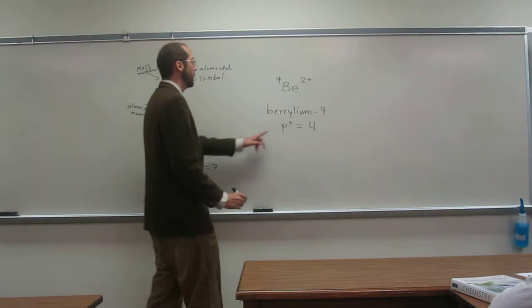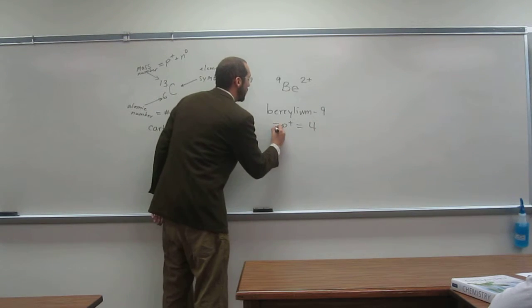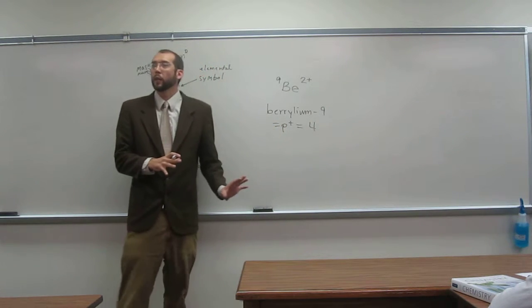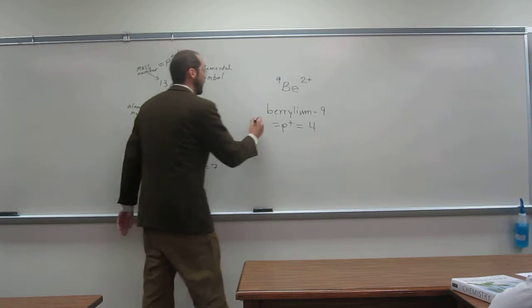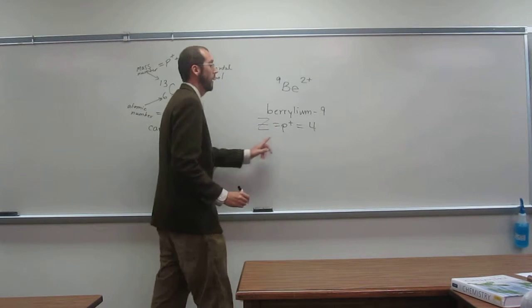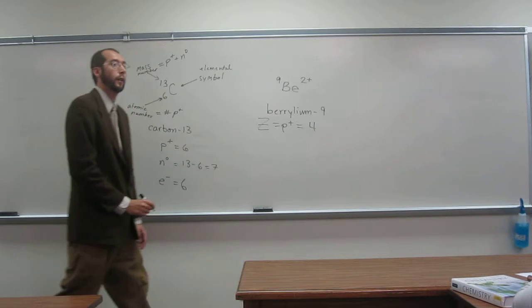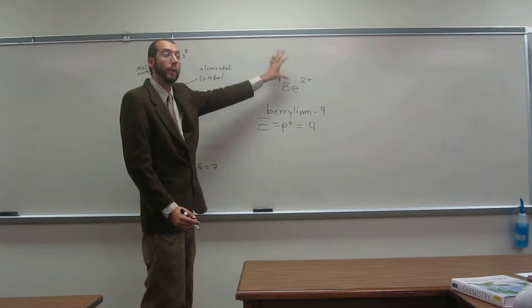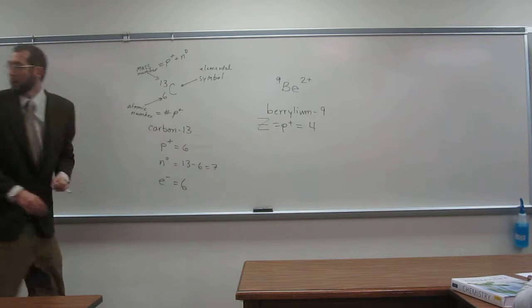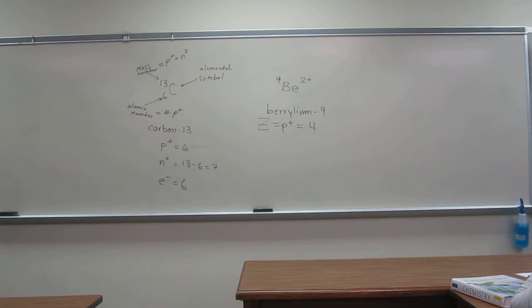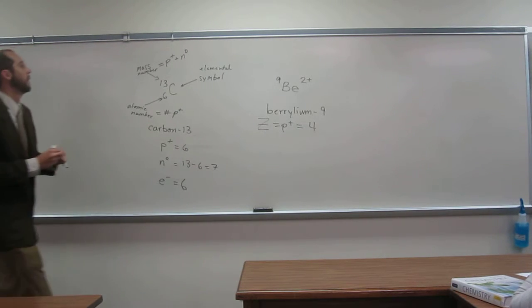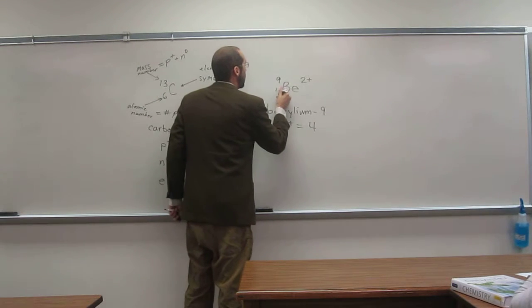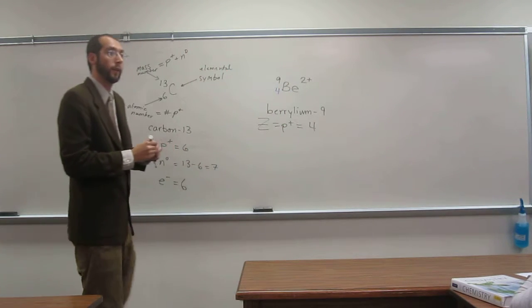So in other words, we could say, what's the symbol for atomic number? Z, right? So Z also equals four. Or if we wanted to put that somewhere on the elemental symbol here, do it in a different color, it would be there that we would see.